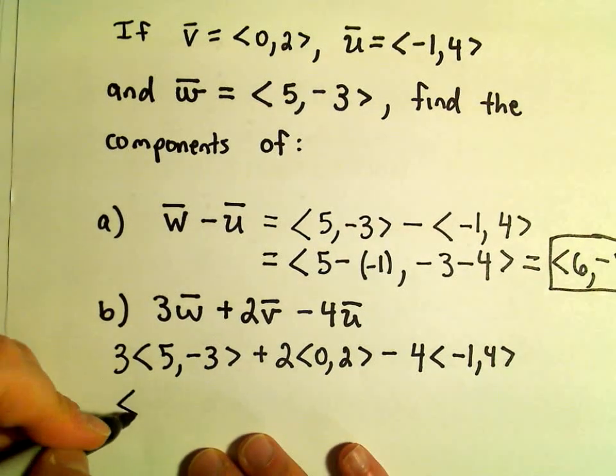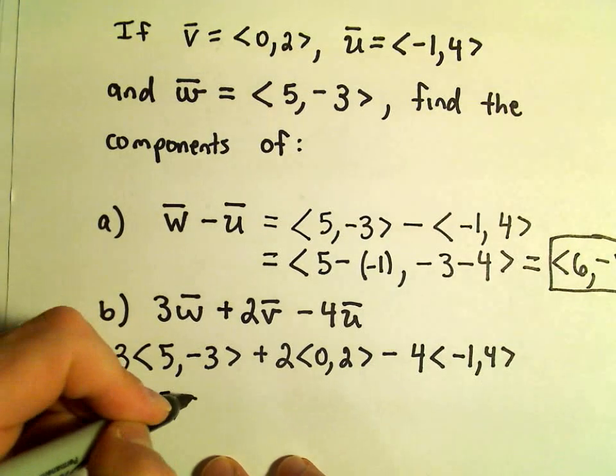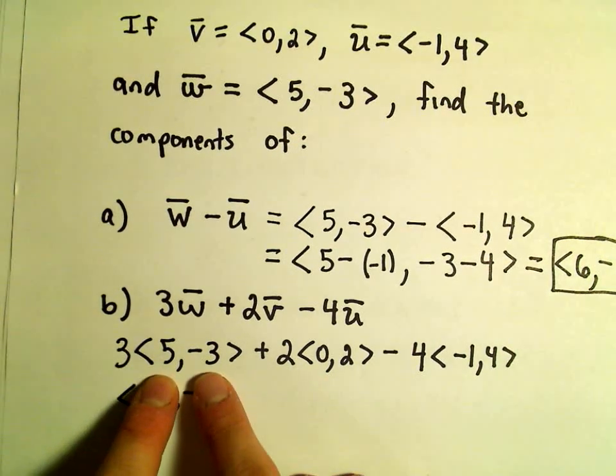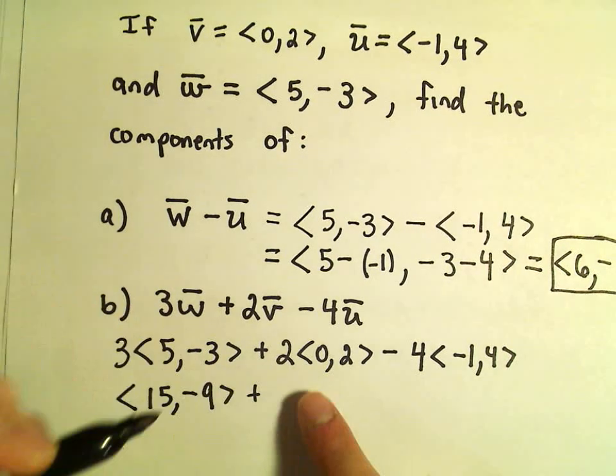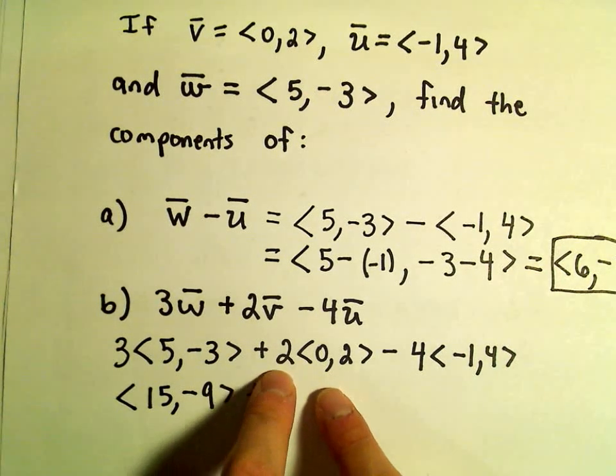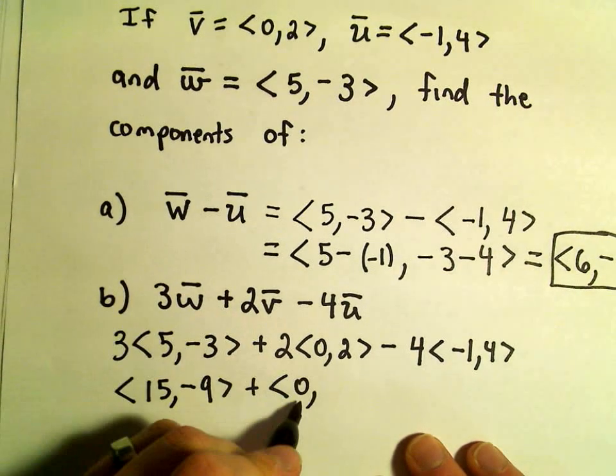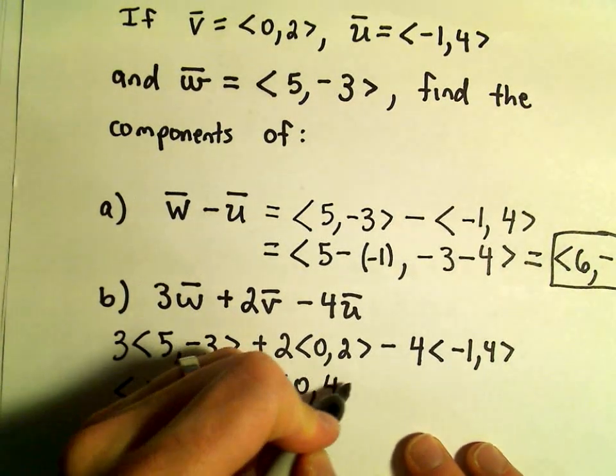Well, if we distribute the 3, we'll get 15 and negative 9 for the components of our first vector here, after multiplying. I'll distribute, it basically feels like distributing. So 2 times 0 will be just still 0. 2 times 2 will give us 4.